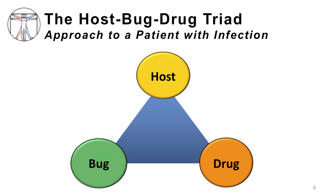The host-bug-drug triad is an extremely helpful construct to help clinicians make antibiotic decisions. Choosing an initial or empiric antibiotic often involves more than simply choosing a drug for a disease entity. The empiric antibiotic choice requires knowledge of host risk factors for certain pathogens — for example, recent travel, specific hobbies or activities, or coexisting diseases — local or community-wide resistance patterns, and likelihood of pathogen resistance, among other microbiological and clinical characteristics.